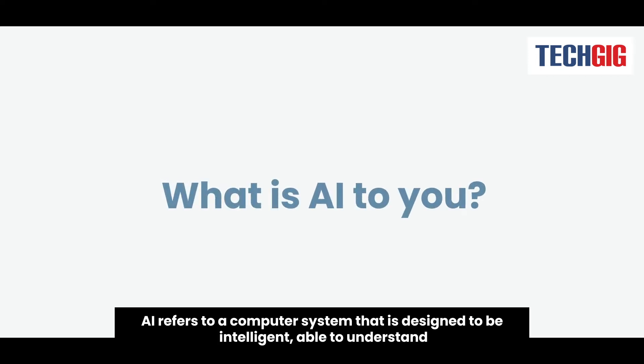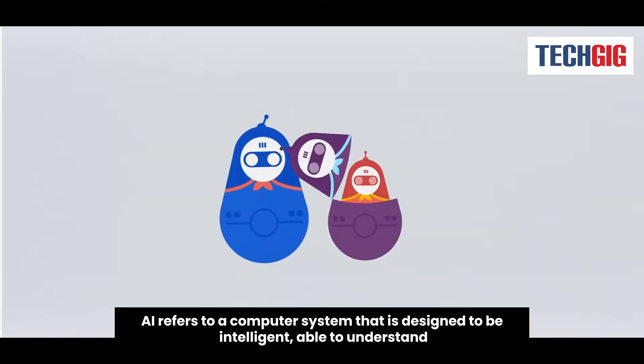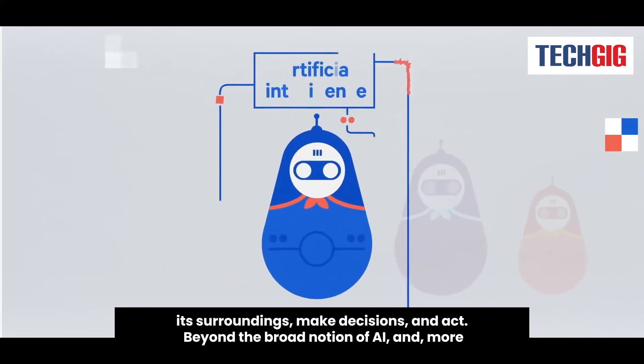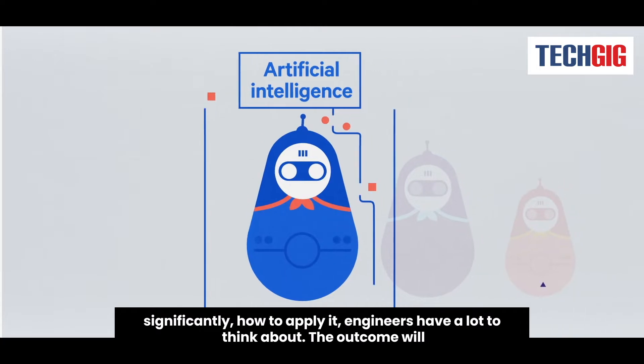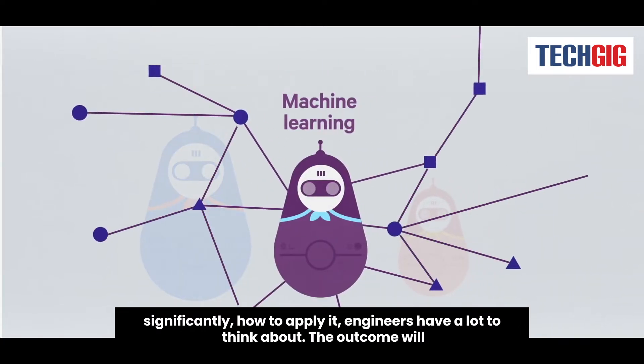AI refers to a computer system that is designed to be intelligent, able to understand its surroundings, make decisions, and act. Beyond the broad notion of AI, and more significantly how to apply it, engineers have a lot to think about.